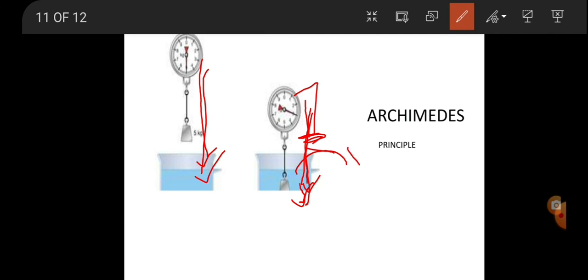The W1 is the first weight. Weight of the fluids displaced. Then W2 is the weight of the water displaced. Then displaced fluid and water.